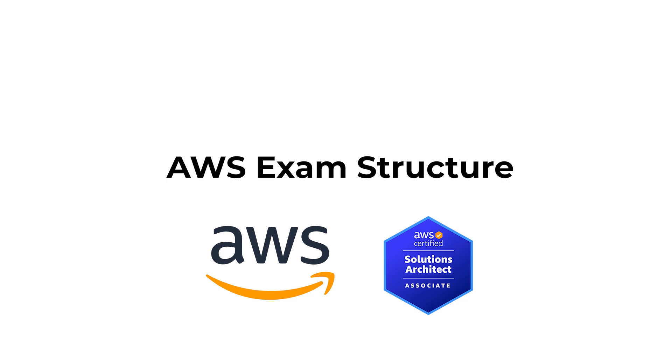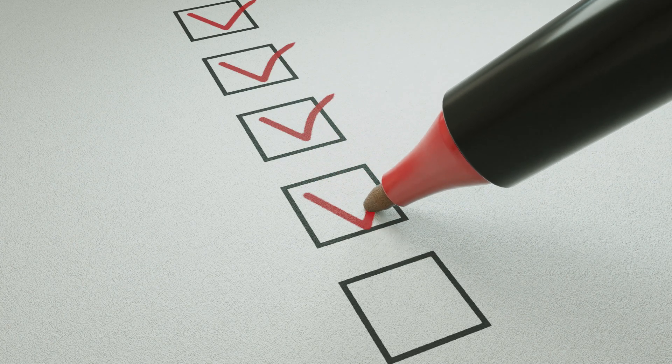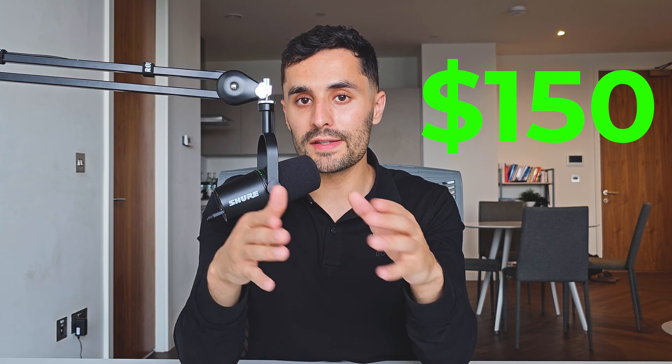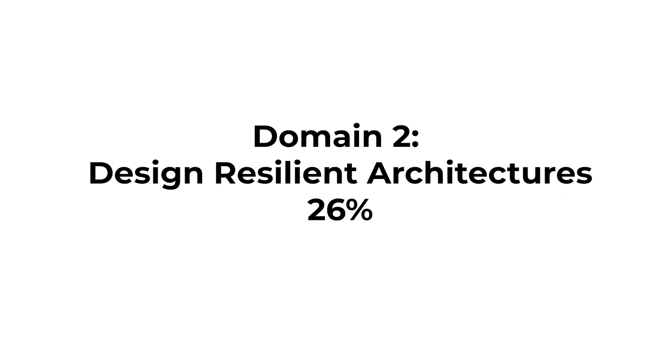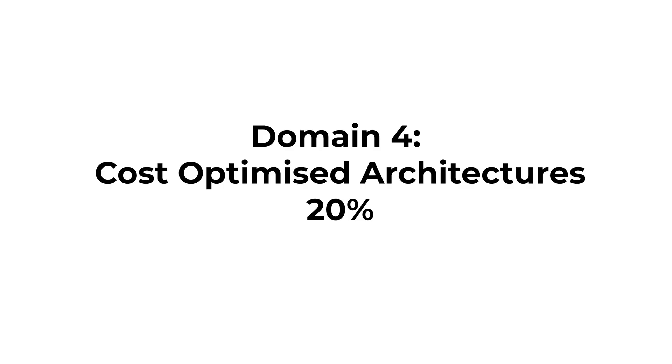The exam structure consists of 65 multiple choice and multiple response questions. You have 130 minutes to complete this exam and it will cost you $150 US dollars. You can take your exam either at home or in test centers. This exam is made up of four domains, each with a specific weighted percentage. Domain one is design secure architectures at about 30%. Domain two is design resilient architectures at 26%. Domain three is design high performing architectures at 24%. And domain four is design cost-optimized architectures at 20%. I will link the full exam guide below in the video description so you can see the full breakdown of each domain and the topics you need to learn.